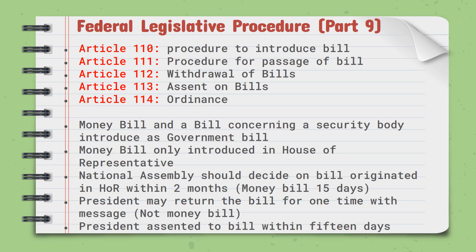Our federal legislative procedure is defined in Part 9 of our constitution. Article 110 covers the procedure for introducing a bill. Article 111 covers the procedure for passing a bill. Article 112 provides for the withdrawal of a bill. Article 113 provides for the ordinance.